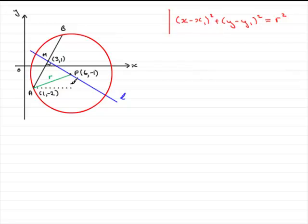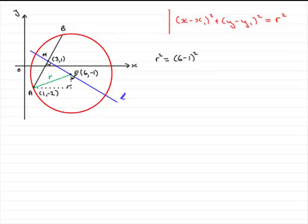We can consider a right-angle triangle like this, with the right angle placed here. Pythagoras' theorem gives us the hypotenuse squared — that's r squared — equals the sum of the squares of the two other sides. So r squared equals this side squared: that's the difference in the x coordinates, so 6 minus 1, all squared. Plus this length squared — that's the difference in the y coordinates, so minus 1 minus minus 2, all squared.